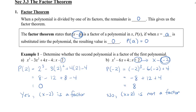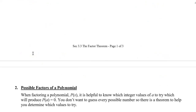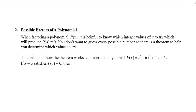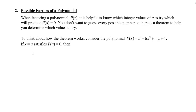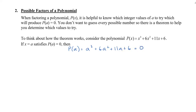So how do we know which numbers to check? If we're just given a polynomial, how do we know which numbers to check to see if it's a factor? This leads us into possible factors of a polynomial. To think about how the theorem works, let's consider this polynomial to see which numbers to choose. If x equals a and satisfies p of a equals 0, then substituting into a cubed plus 6a squared plus 11a plus 6 should give 0.